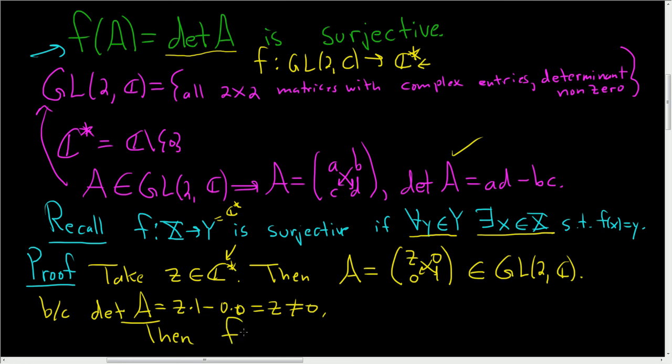Then F of A, well, that's the determinant of A, is equal to z. So we started with a z in our codomain. We found an A in our domain such that F of A is equal to z. So we're done. This shows F is surjective.